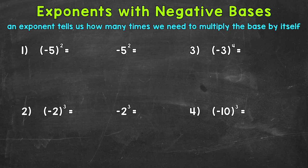Starting with number 1, where we have negative 5 squared. We have a negative 5 that is within parentheses, and then a negative 5 without parentheses. There is a difference here, so I want to show you how these differ. The parentheses are very important, so something to keep in mind.